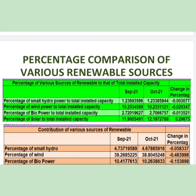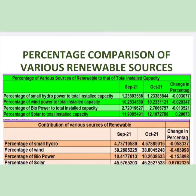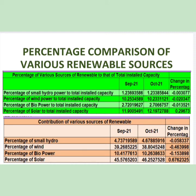Again, coming to the percentage comparison of various renewable resources: for small hydro, wind, and biopower it is in the negative, but for solar it is on the positive side at 0.29%. Looking at table number two, the percentage of small hydro, wind, and biopower have decreased, but the solar contribution has increased by 0.67%, going to 46.25% compared to 45.57% last time. Thank you everyone, thanks a lot.